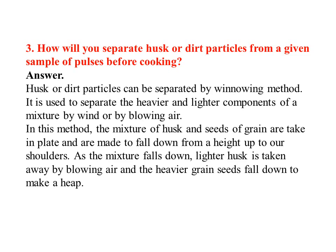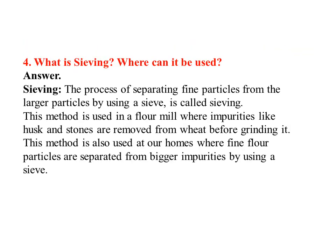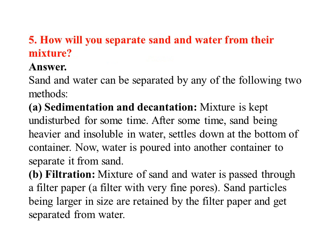Next question: What is sieving and where can it be used? Sieving is the process of separating fine particles from larger particles using a sieve. This method is used in flour mills where impurities like husk and stones are removed from wheat before grinding. It is also used at home where fine flour particles are separated from bigger impurities using a sieve.